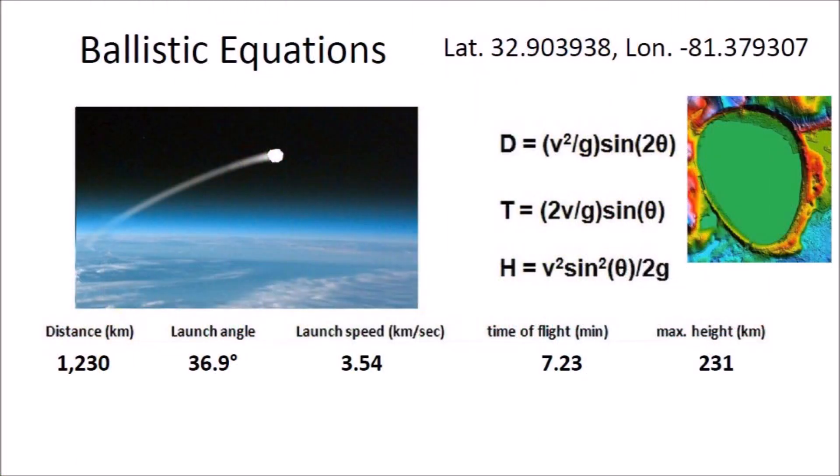Using Google Earth to measure the distance, we find that this bay is 1,230 kilometers from Saginaw Bay, which is the convergence point of the Carolina Bays and the Nebraska Rainwater Basins. Assuming that the launch angle is the same as the impact angle, the ballistic equations indicate that the glacier ice boulder that made this bay was launched at a speed of 3.54 kilometers per second. It had a flight time of 7.23 minutes and reached a height of 231 kilometers above the surface of the Earth. The trajectory was a suborbital spaceflight in the vacuum of space.